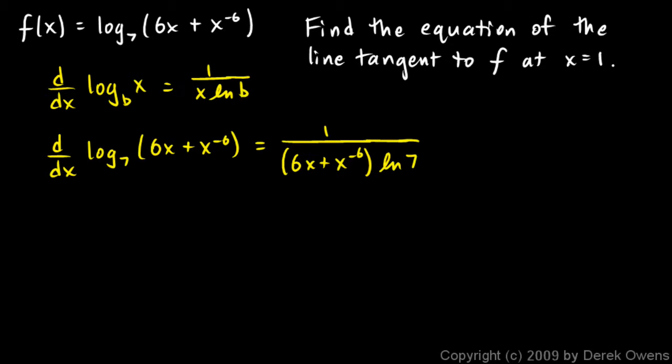Now that's how we would differentiate it if it were just a simple variable here, right here. But this isn't just a variable, this is a function, so we have to apply the chain rule. What we just did right here was take the derivative of the outer function, log base 7 of this. And now we need to multiply by the derivative of the inner function.